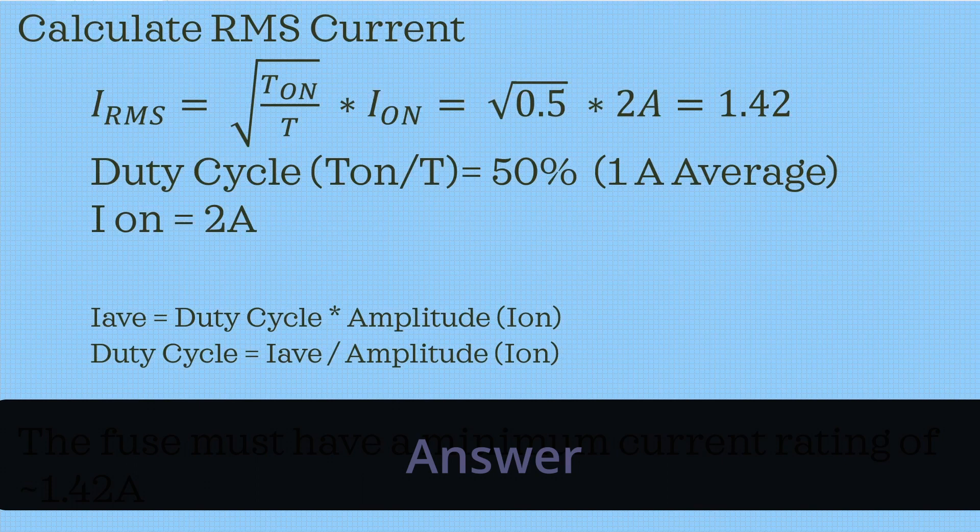Duty cycle is equal to the average current divided by amplitude, which is the on current. And in this case, that's 2A. So the average current, which is 1A, divided by the amplitude, which is 2A, we get a duty cycle of 0.5 or 50%.